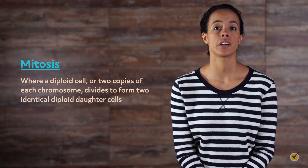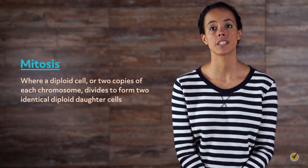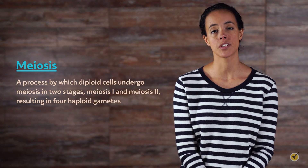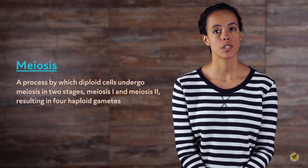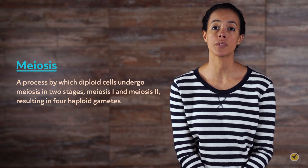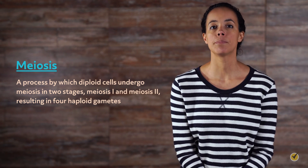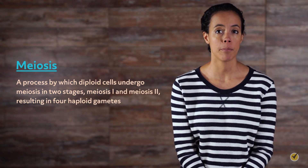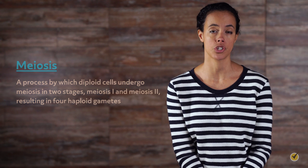In short, mitosis is where a diploid cell — two copies of each chromosome — divides to form two identical diploid daughter cells. Meiosis is a process by which diploid cells undergo meiosis in two stages, meiosis I and meiosis II, resulting in four haploid gametes. Diploid means the cell has two copies of each chromosome, and haploid refers to each cell having only one copy of each chromosome.